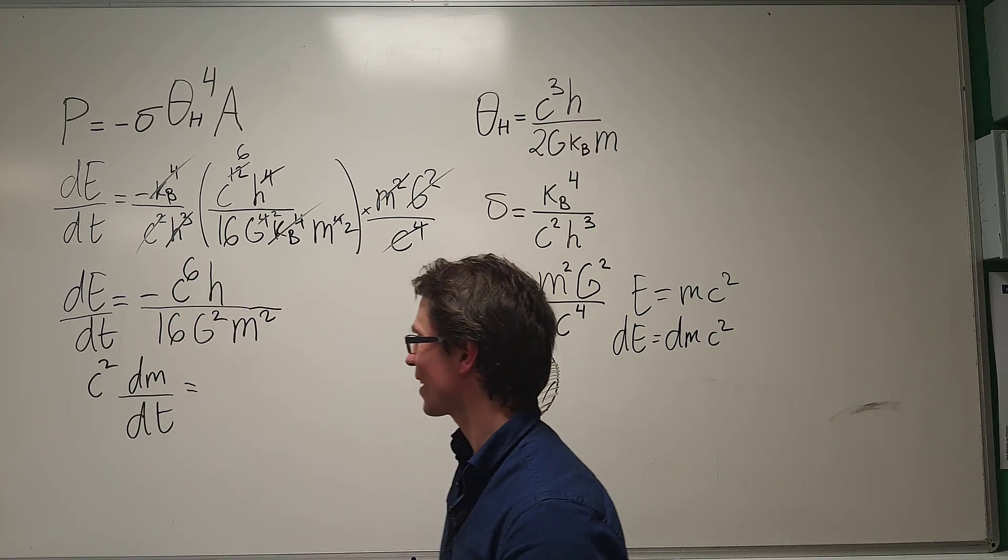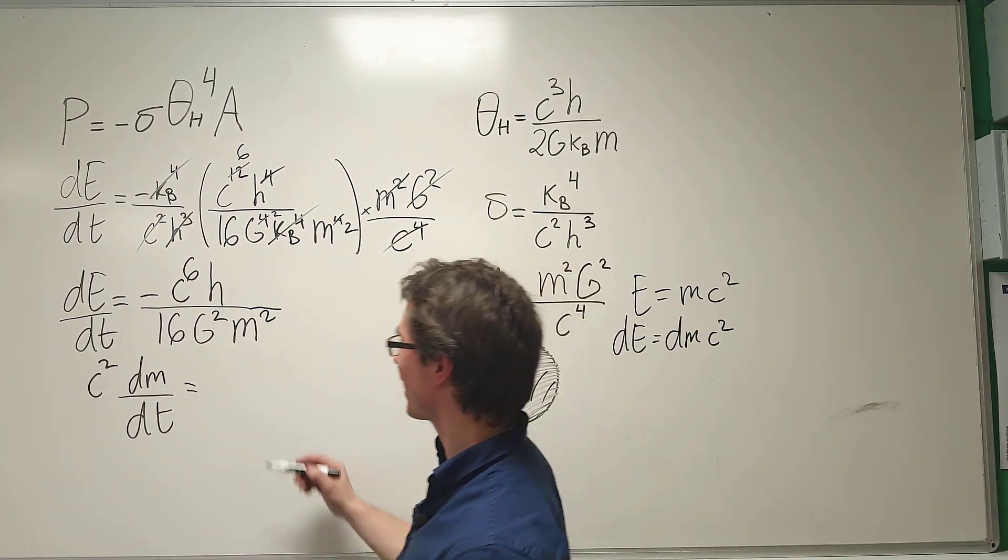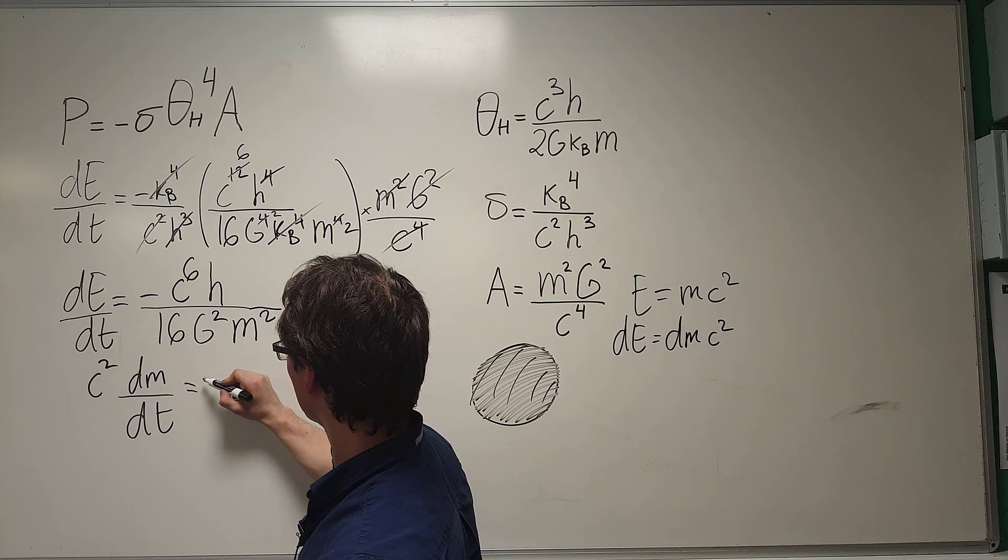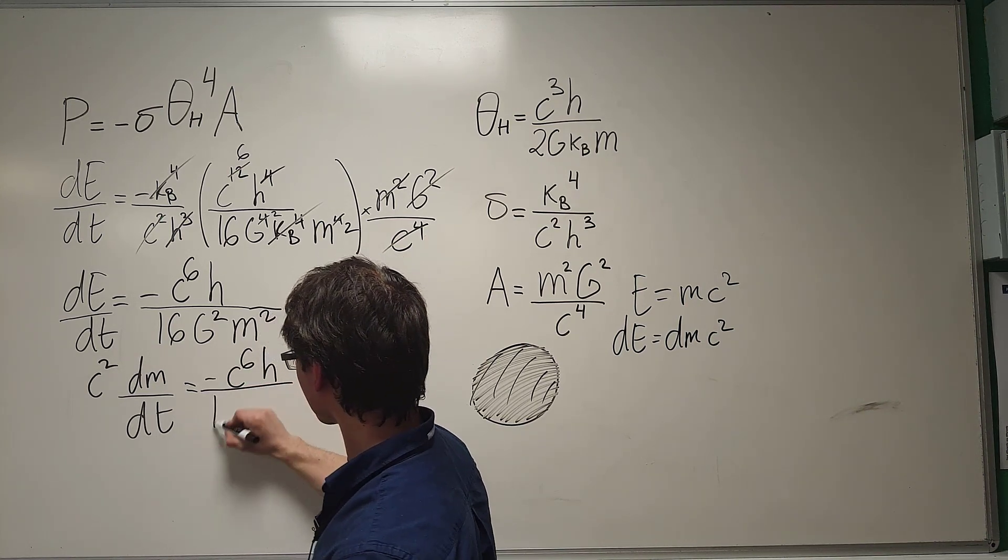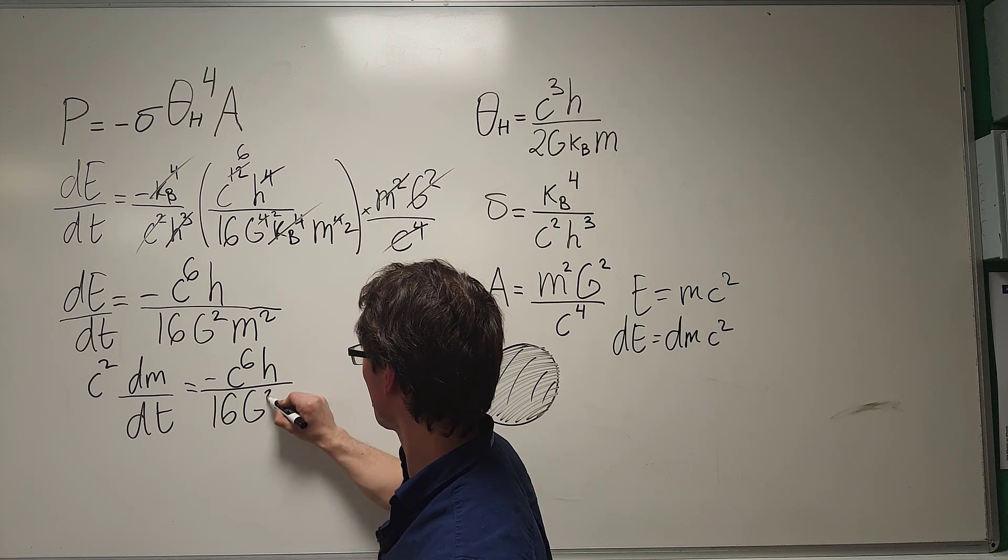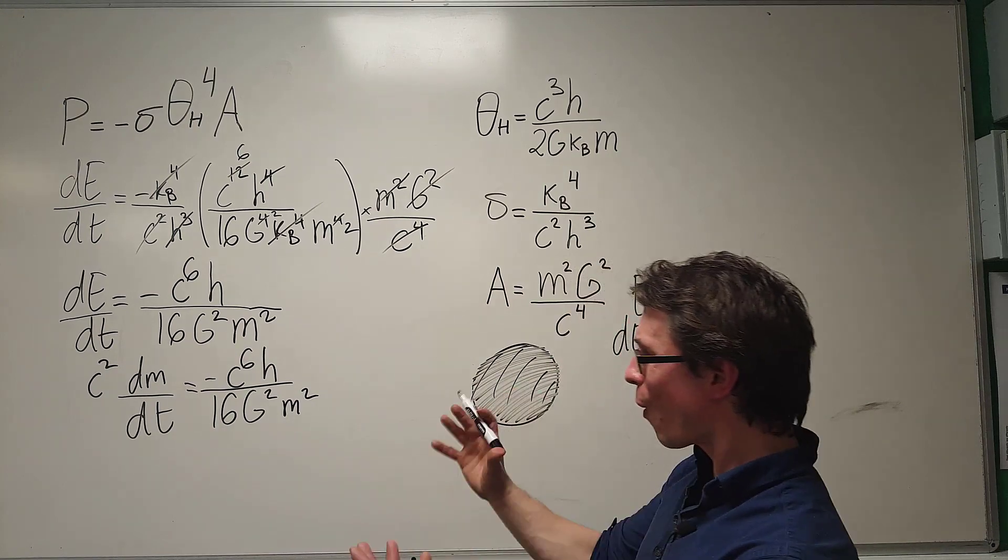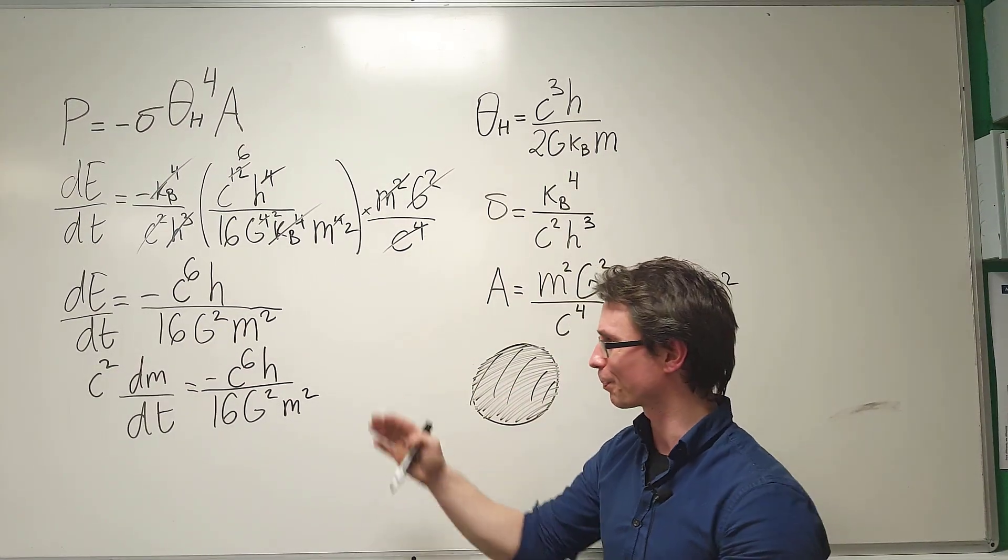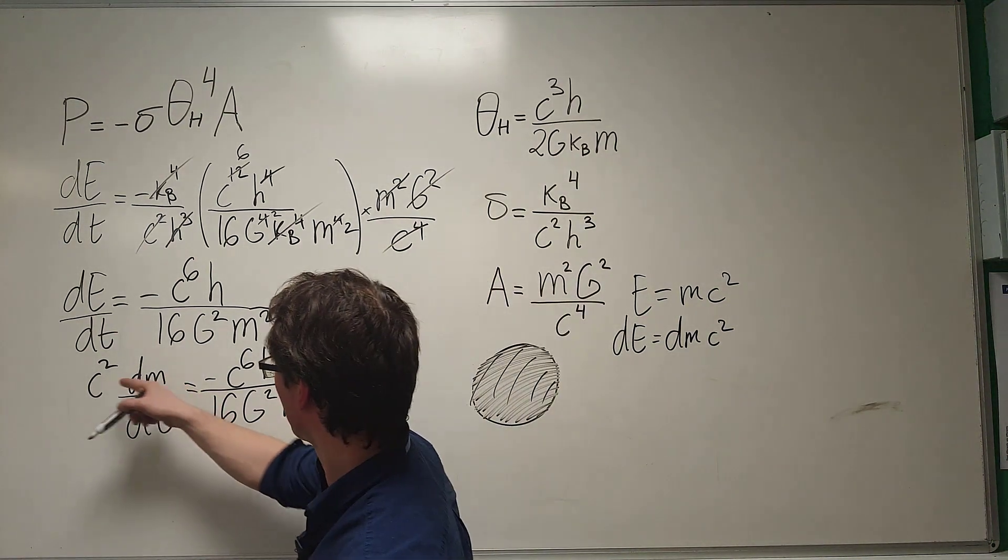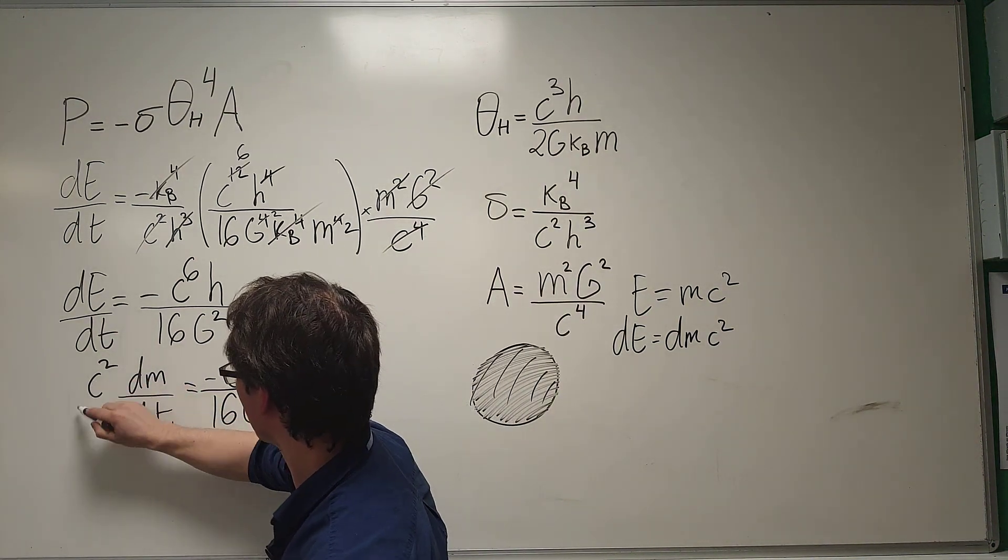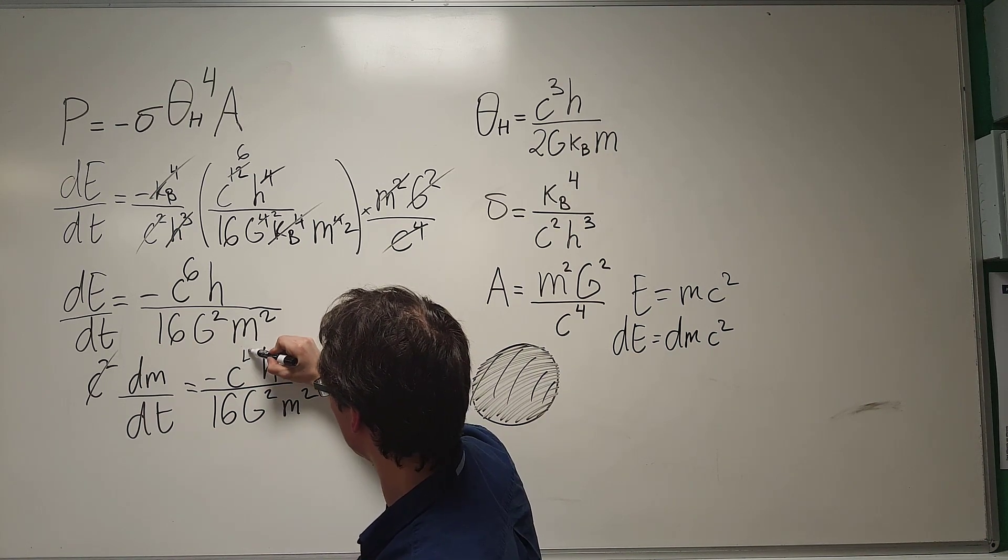Look at that. So, I'm already getting a differential equation with respect to the rate of change of mass, and this will be equal to minus C to the power of 6 H over 16 G squared, and then I have a factor of M squared. Now, all we need to do is just cancel out those factors of C, so C squared is going to move up here, which means that this will get canceled out, and this one here will turn to the power of 4.